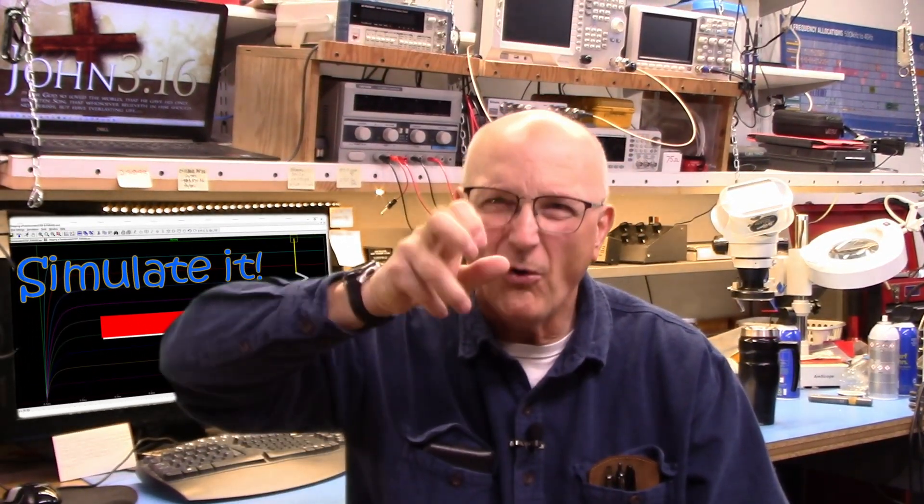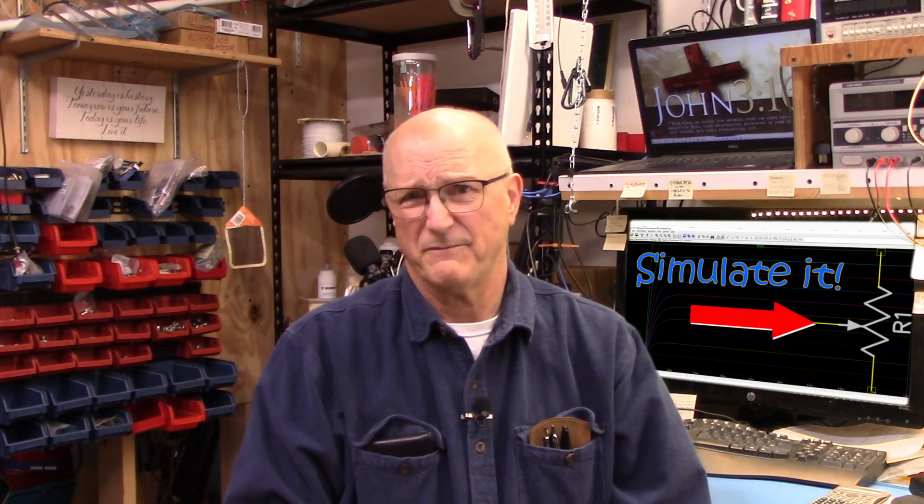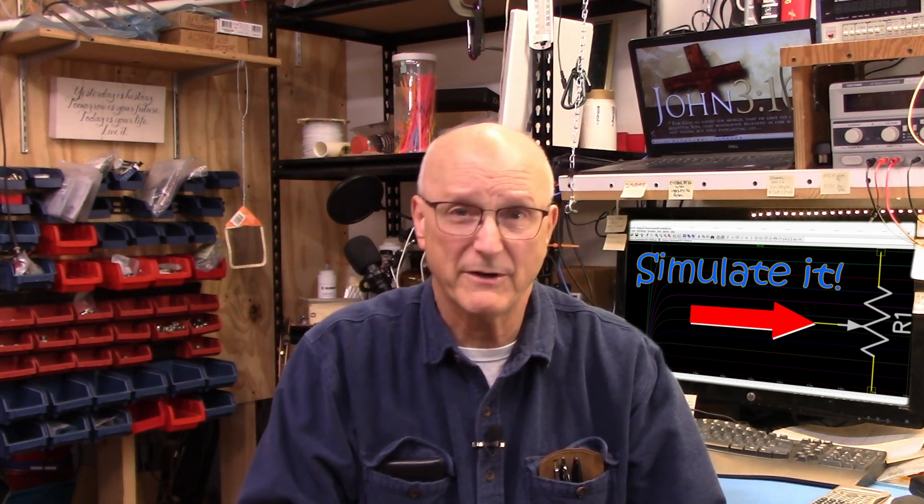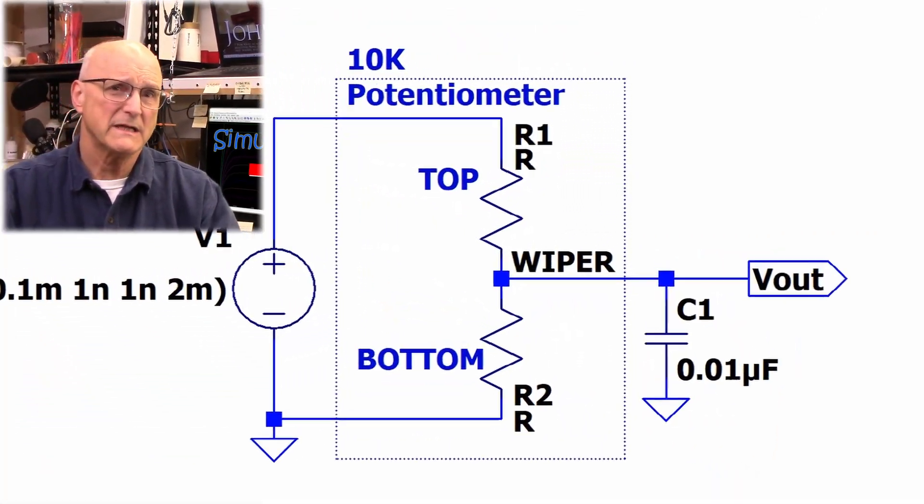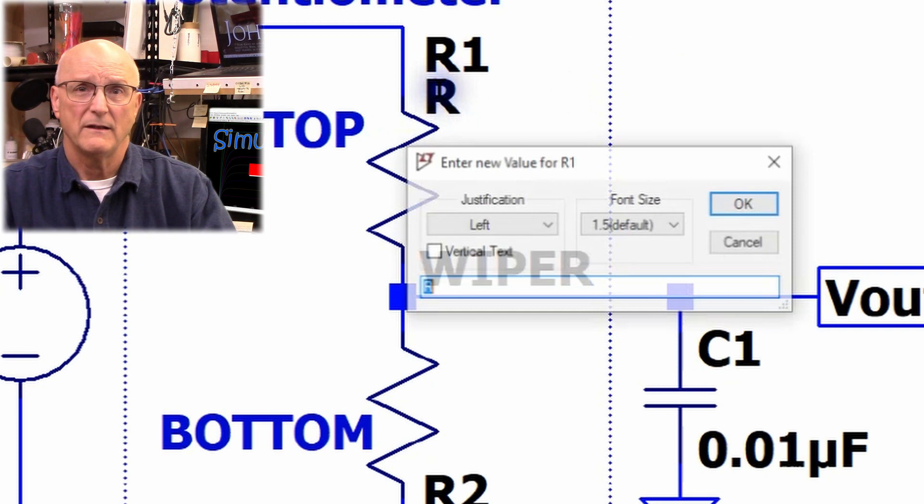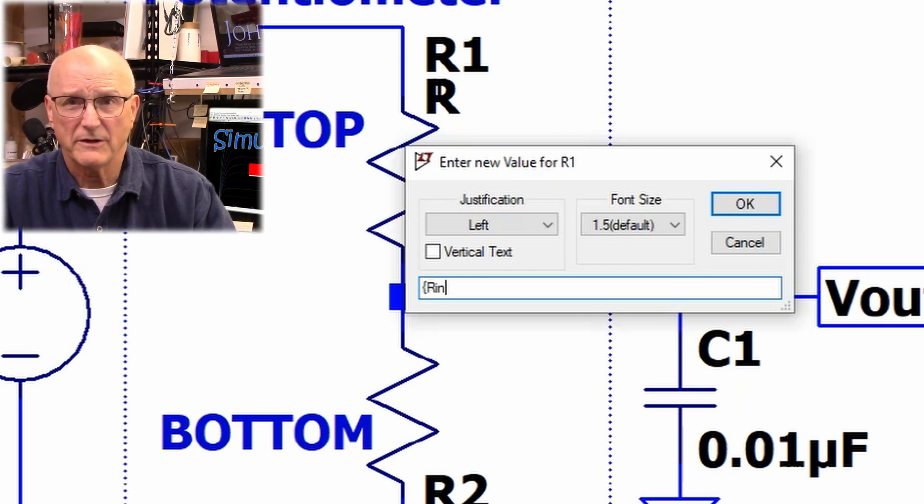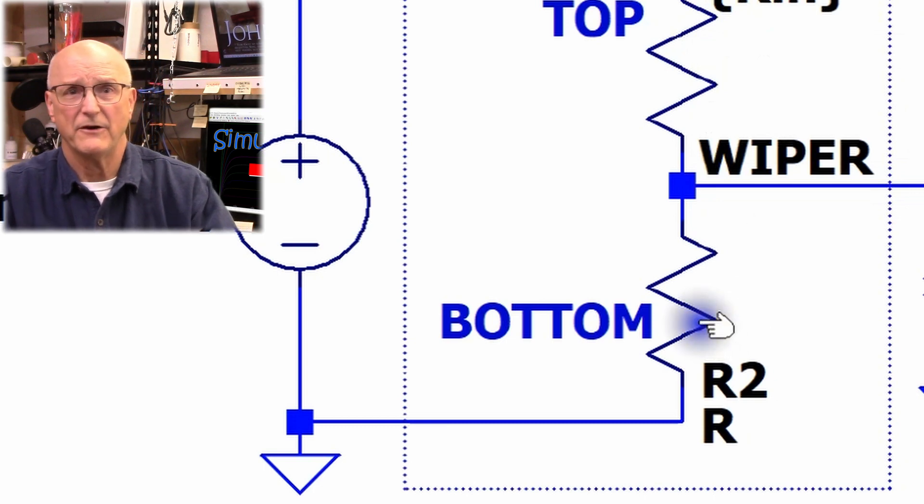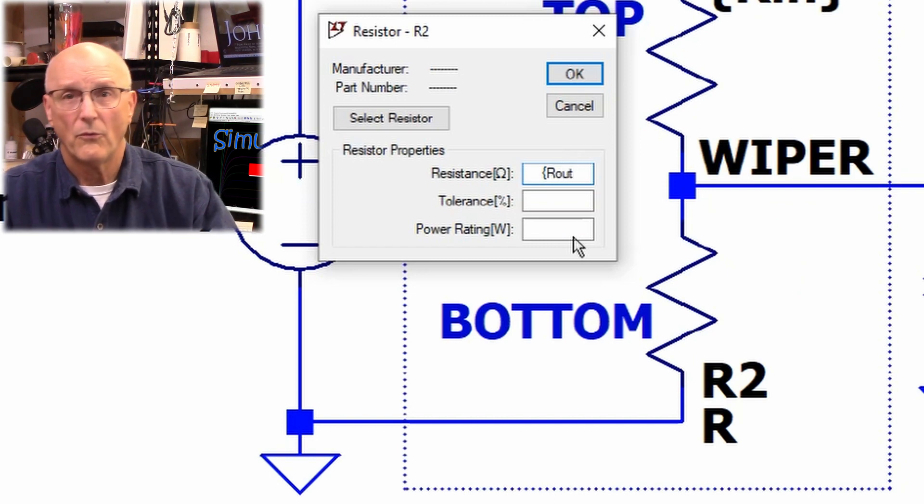How do we make LT Spice do the whole variable resistor action thing? The first step is to give the resistors funky values. What we are doing is assigning them values that are called Spice parameters. These are like variables in programming or algebra. I will assign R1 the value left curly bracket Rn right curly bracket, and R2 the value left curly bracket Rout right curly bracket.